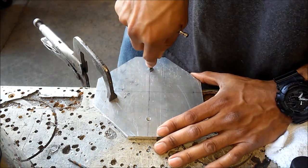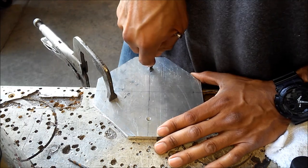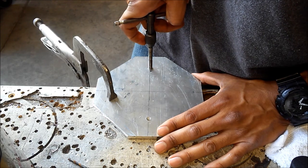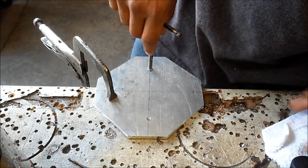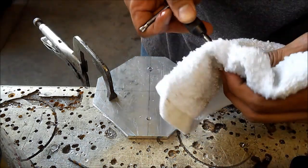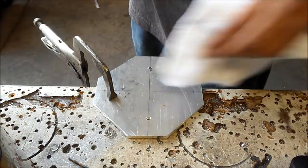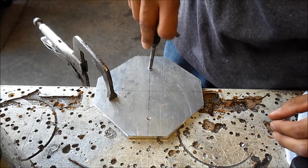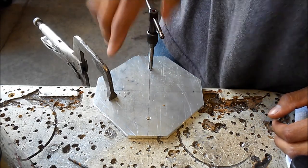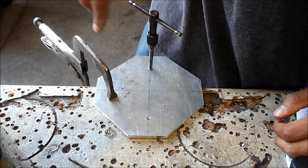You are going to come to the point where the tap just won't go anymore. Just back it out, take it out all the way, and clean all the shavings off from the tap and from the hole. You may have to do this a few times. Sometimes you can back it off a bit and then keep going. Just remember don't force it because you are gonna break the tap if you do.